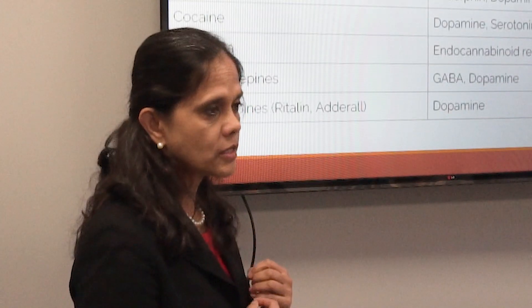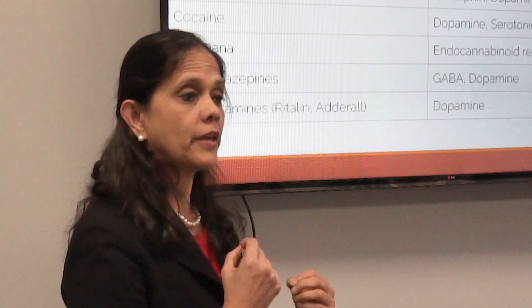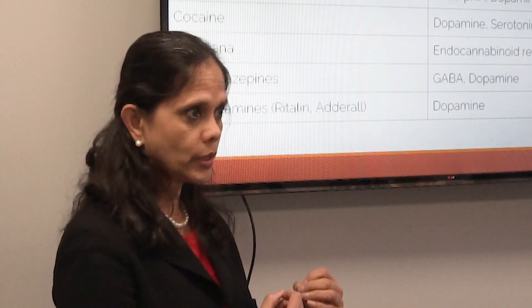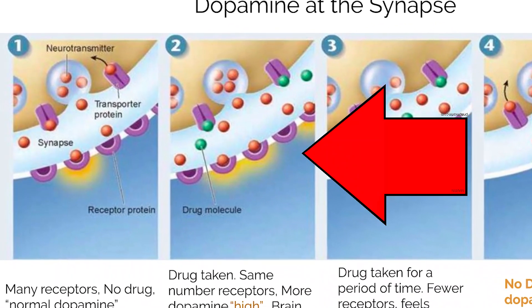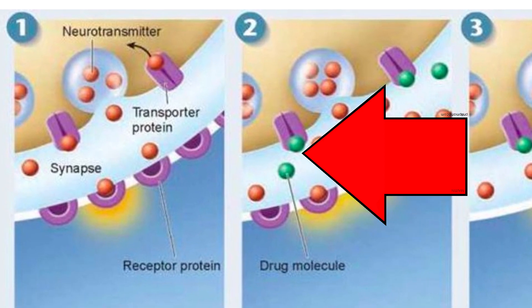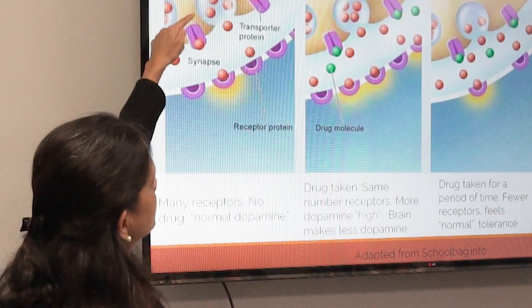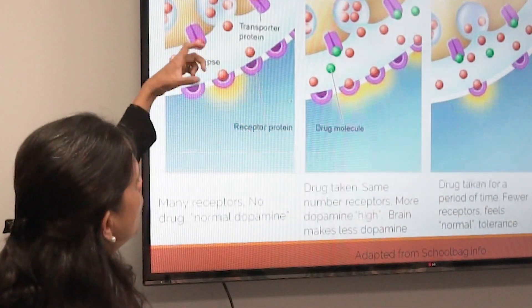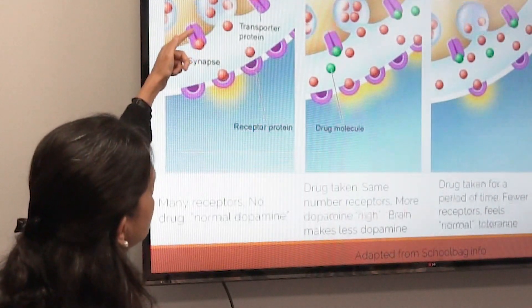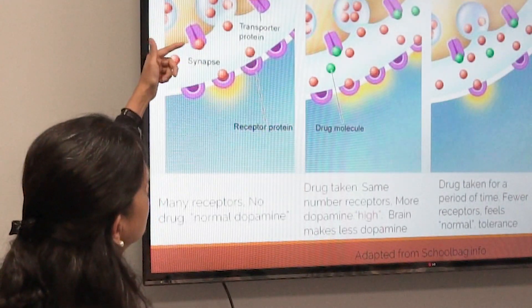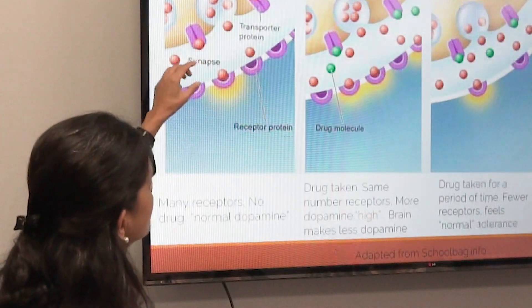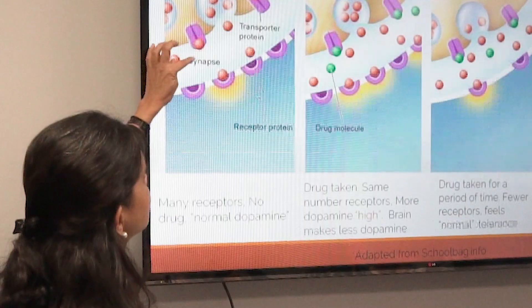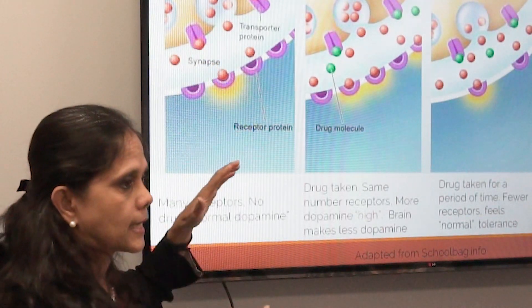This is a very important slide showing what happens at the neurotransmitter level at the synapse for someone using cocaine. In normal neurotransmission, a signal comes down, the vesicle releases dopamine neurotransmitters, and dopamine docks onto the receptor. The orange glow means the signal is being propagated. Some dopamine is degraded in the synapse, and some goes back to the sending cell via reuptake.